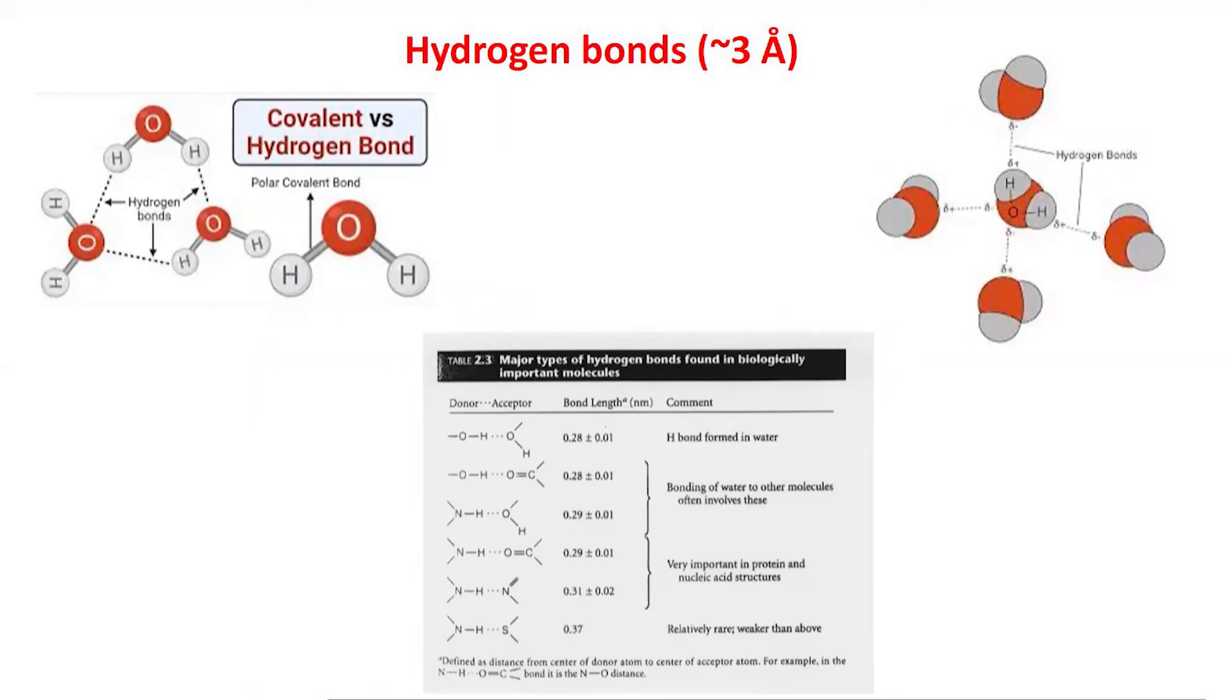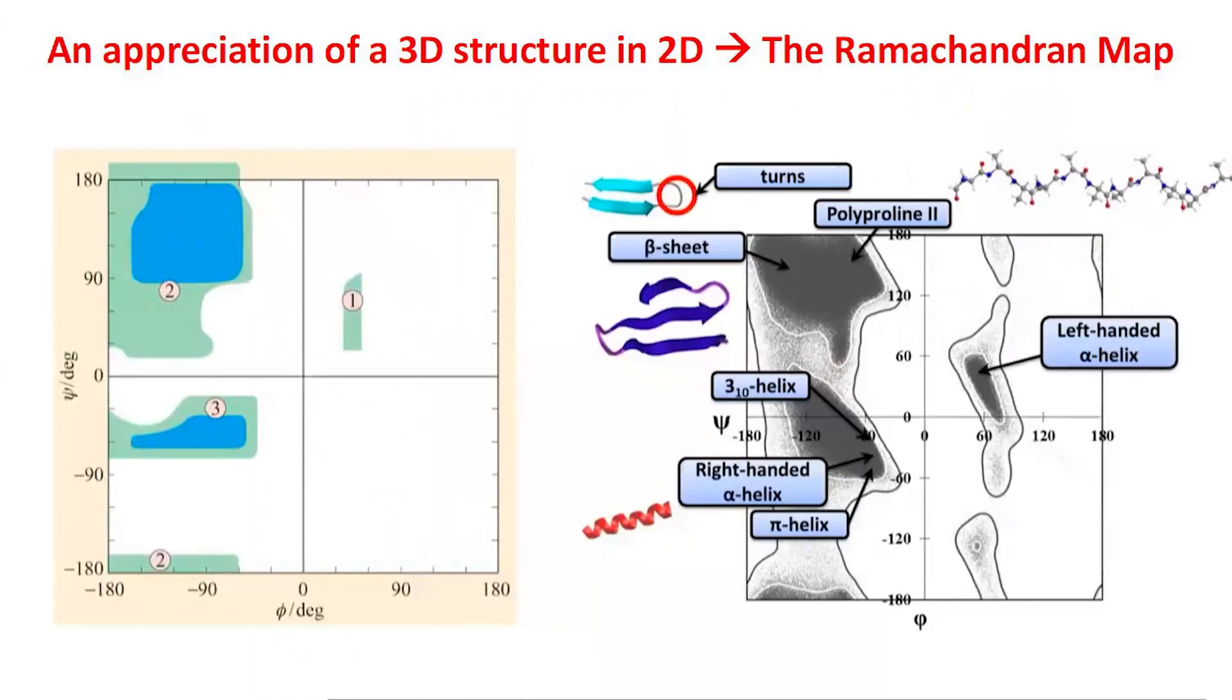It's a longer bond than a covalent bond and it's a bond which is fairly easy to break as compared to a covalent bond. Water molecules in liquid water will have dynamic breaking and rejoining of all these water molecules. When you convert water into ice, this dynamic structure becomes a little more frozen with these bonds being fairly important in the transition.